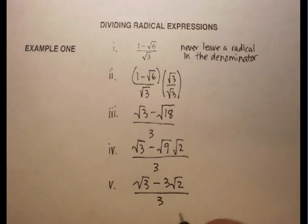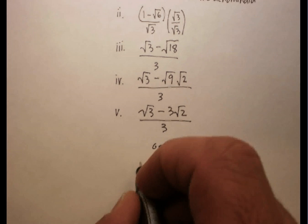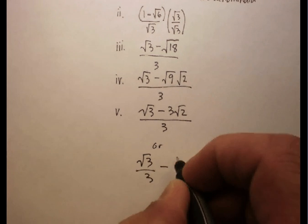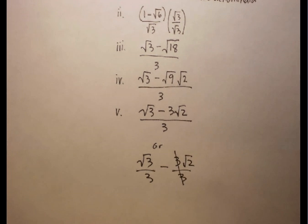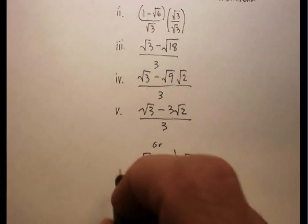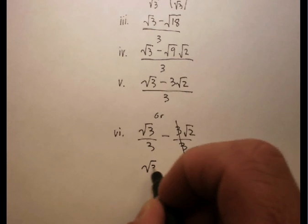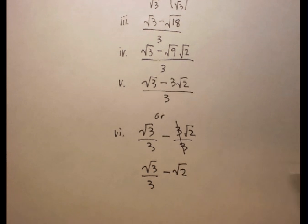Or I can do it this way as well: radical 3 over 3 minus 3 radical 2 over 3. Now I can go ahead and cross that out, and that leaves me with an answer of radical 3 over 3 minus radical 2.